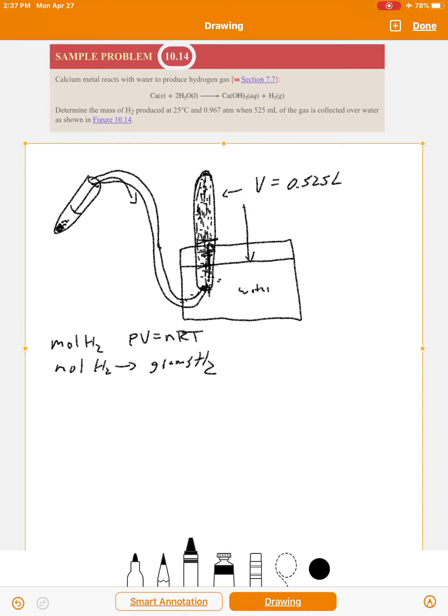And so there will be some water vapor in that container. So what happens is when the atmospheric pressure equilibrates with the pressure in here, the pressure of the gases in here have to equal the pressure out there. So that means the total pressure, which is 0.967 atm, that's going to be equal to the pressure of the hydrogen plus the vapor pressure of the water.